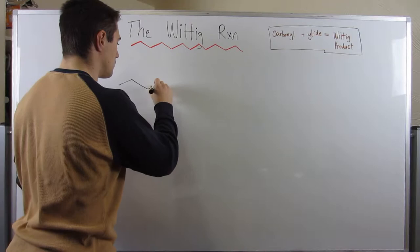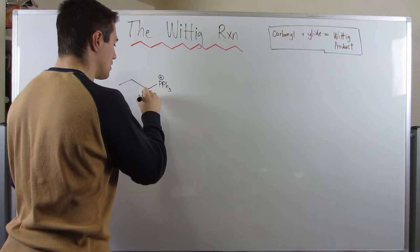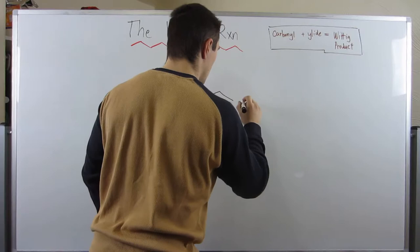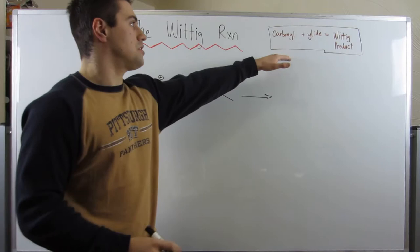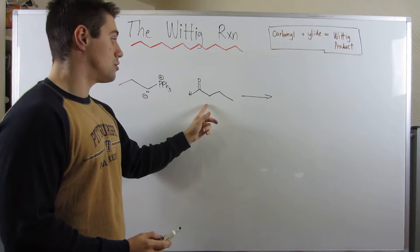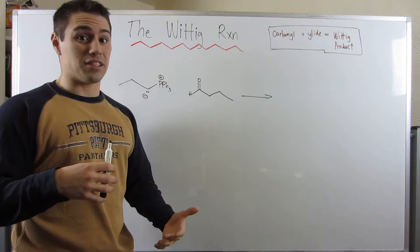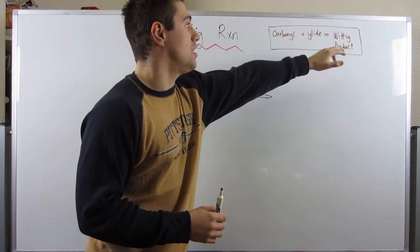So don't be thrown off by any of this stuff. If you can see up in this box, for a Wittig product to be formed, you need a carbonyl, check, something called a ylid, again, another useless, fancy vocabulary word to flash in your arsenal of words. And if you have a carbonyl and a ylid, you'll form what's called a Wittig product.